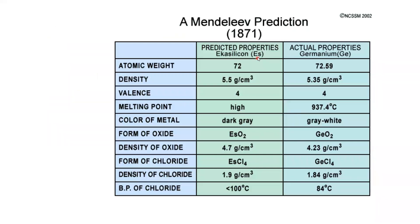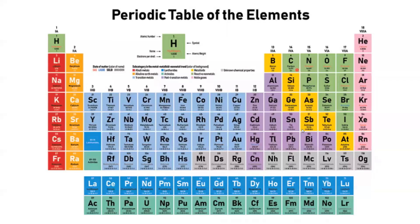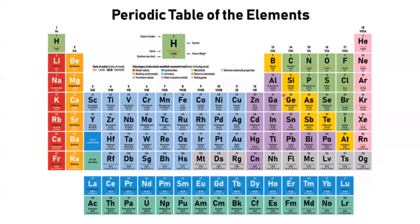If we look at silicon versus germanium: 'eka-silicon' is just going to be his prediction for germanium — it's referring to 'below silicon.' Whereas the germanium column is what the actual element turned out to be after it was discovered. This occurred in 1871, prior to germanium actually being discovered. Eka-silicon is just Dmitry Mendeleev's prediction for what that element was going to be. He did a very good job because he understood the properties of this element would be similar to the other elements within that group.